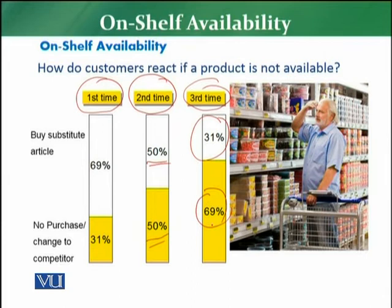This picture clearly shows that if a customer cannot find a product on the shelf: the first time maybe they shift to a substitute, the second time maybe they shift to a competitor, and the third time they will not visit your retail store at all. This on-shelf availability issue has a direct impact on your overall business and overall sales.